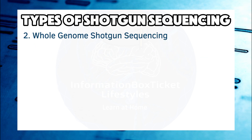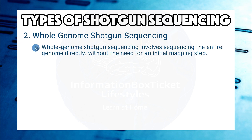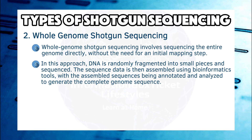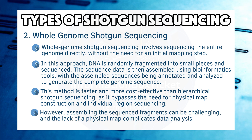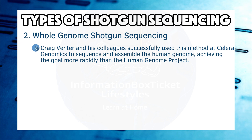Whole genome shotgun sequencing involves sequencing the entire genome directly, without the need for an initial mapping step. DNA is randomly fragmented into small pieces and sequenced. The sequence data is then assembled using bioinformatics tools, with the assembled sequences being annotated and analyzed to generate the complete genome sequence. This method is faster and more cost-effective than hierarchical shotgun sequencing, as it bypasses the need for physical map construction. However, assembling the sequenced fragments can be challenging, and the lack of a physical map complicates data analysis. Craig Venter and his colleagues successfully used this method at Celera Genomics to sequence and assemble the human genome, achieving the goal more rapidly than the Human Genome Project.